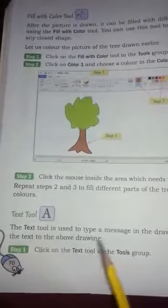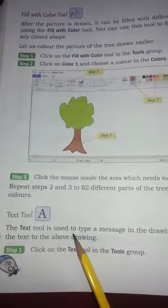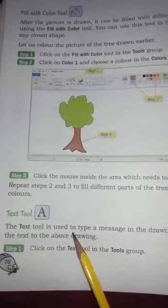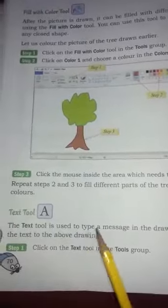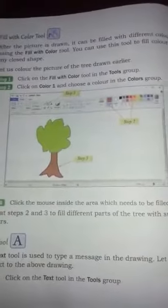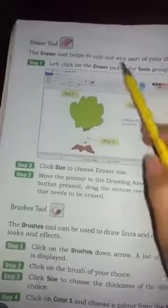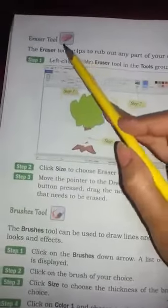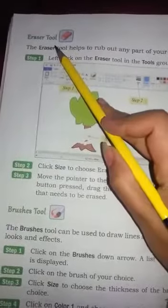Text tool — in MS Paint we can add text using the text tool. Next page, page number 70, there is an eraser tool.